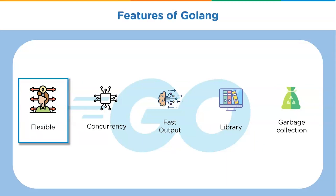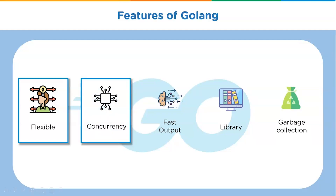Now we'll look into the features offered by Golang. First is flexibility — because of the language design and its roots from C, Golang is easy to learn and understand with simple syntax. Next is concurrency: Go allows multiple processes to run simultaneously, and its ability to take advantage of multi-core processor architectures with efficient memory use is one of the reasons why Go code powers some of the most heavily used scalable applications.